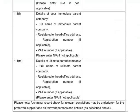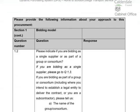Moving on to questions 1.1L and 1.1M, which cover details of your immediate parent company and your ultimate parent company respectively. These two questions may not be applicable to your organisation, in which case simply enter N/A. However, if you do have a parent company or ultimate parent company, you'll need to provide the full name, registered office address, and registration number as requested.